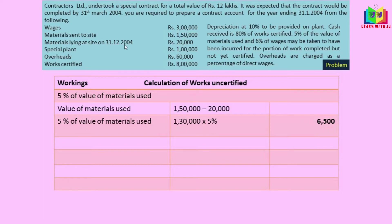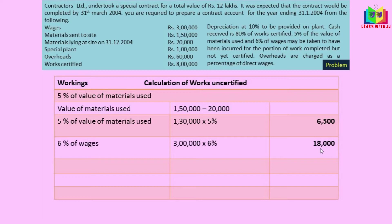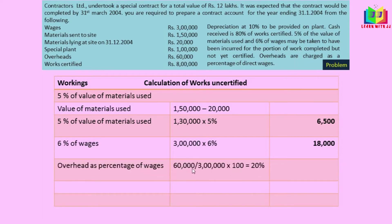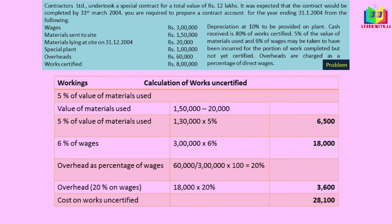Next, 6% of wages is to be calculated. The wages are 3 lakh, so 6% of 3 lakh gives 18,000 — this is the 6% of wages. Overheads are charged as a percentage of direct wages. Overhead is 60,000 and wages is 3 lakh, so the percentage is 60,000 ÷ 3 lakh = 20%. Now on the works-uncertified wages of 18,000, we apply 20% overhead: 18,000 × 20% = 3,600. This is the overhead for calculating works uncertified. Adding these together gives the cost of works uncertified: 6,500 + 18,000 + 3,600 = 28,100.